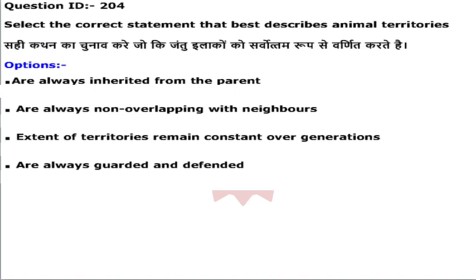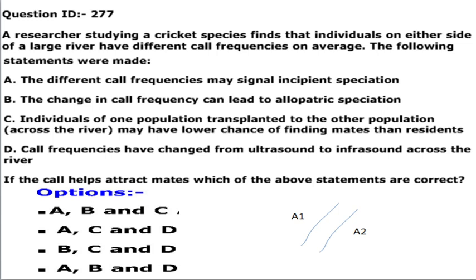Next question: select the correct statement about animal territories. Animal territories are not inherited from parents. They are always non-overlapping with neighbors — animals do not share or overlap territory. The extent of territory is not constant; it keeps changing over generations. The correct statement is that animal territories are always guarded and defended, as animals form territories to protect themselves from neighboring animals. Option C is the correct option.